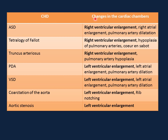Congenital heart defects and associated chamber changes: ASD is associated with right ventricular enlargement, right atrial enlargement, and pulmonary artery dilatation. Tetralogy of Fallot is associated with right ventricular enlargement, hypoplasia of pulmonary arteries, and the coeur en sabot or boot-shaped heart. Truncus arteriosus shows right ventricular enlargement and pulmonary artery hypoplasia. PDA is associated with left ventricular enlargement, left atrial enlargement, and pulmonary artery dilatation. VSD is associated with left ventricular enlargement, left atrial enlargement, and pulmonary artery dilatation. Coarctation of aorta shows left ventricular enlargement and notching of the inferior surface of the ribs. Aortic stenosis shows left ventricular enlargement.